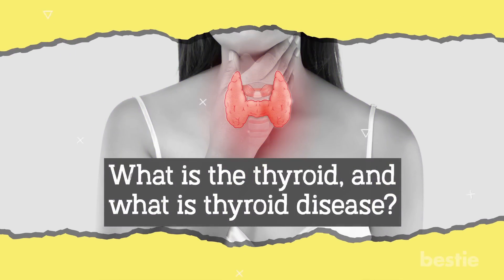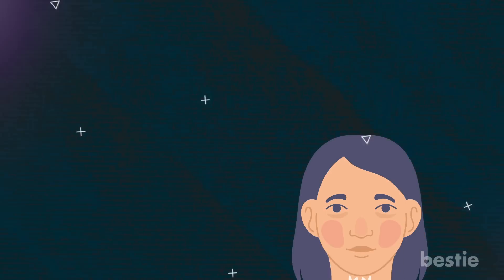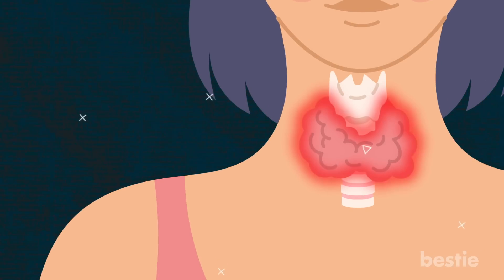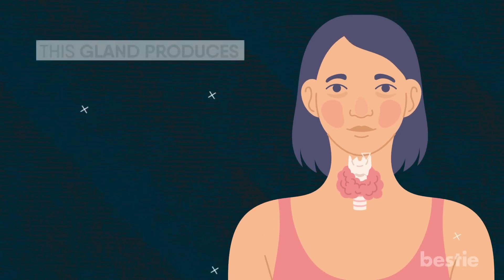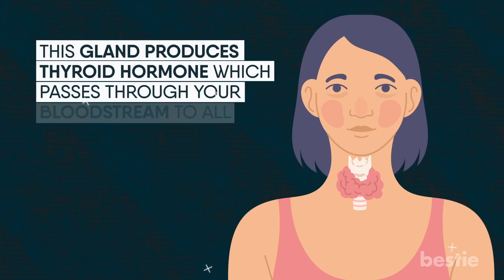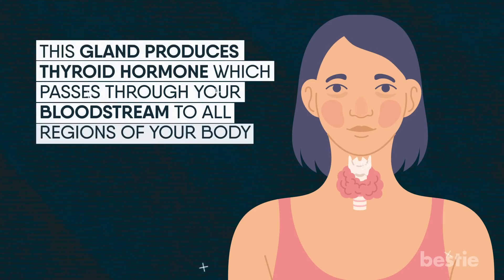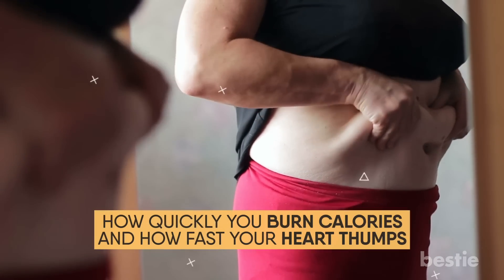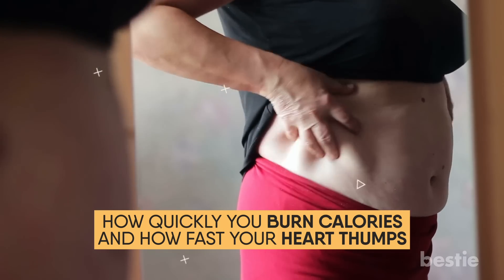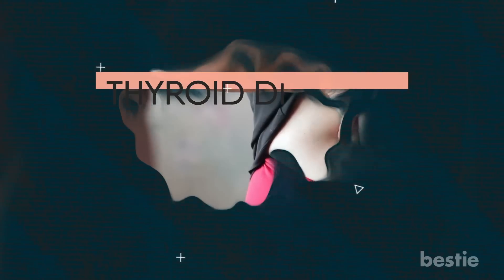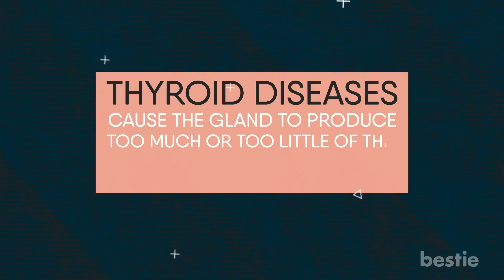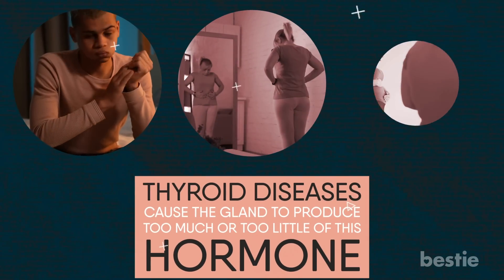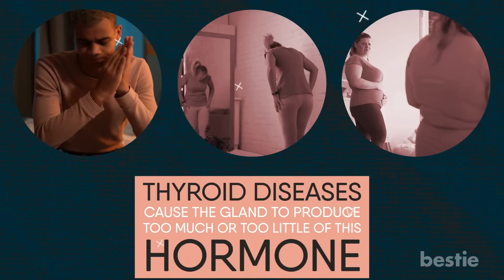What is the thyroid and what is thyroid disease? The thyroid is a little butterfly-shaped gland located right below the Adam's apple at the base of your neck. This gland produces thyroid hormone which passes through your bloodstream to all regions of your body. This crucial hormone regulates several aspects of your body's metabolism, including how quickly you burn calories and how fast your heart beats.